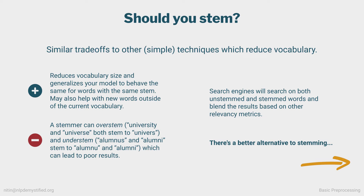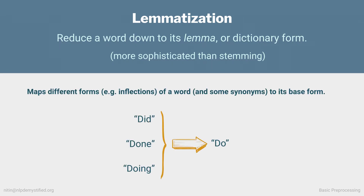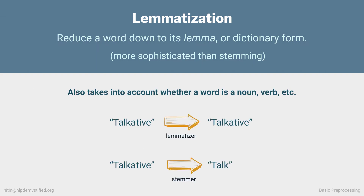There's a better alternative: lemmatization. Lemmatization reduces a word down to its lemma or dictionary form. This may sound the same as stemming, but they're different. Stemmers use a set of rules to remove prefixes and suffixes but don't take into account synonyms, tense, or whether a word is a verb or a noun. Lemmatizers do. So a lemmatizer would convert did, done, and doing into do. But unlike a stemmer, a lemmatizer is more subtle — it would leave a word like talkative alone because it takes into account the word being an adjective, whereas a stemmer would just convert it to talk.